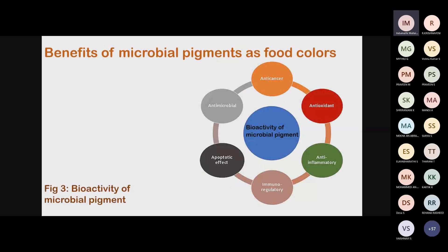Once isolated, what are the actual benefits of these microbial pigments? The benefits include anti-cancer, antioxidant, anti-inflammatory, immunoregulatory, apoptotic, and antimicrobial effects. Not all pigments have all of these properties — for example, prodigiosin has anti-malarial activity, while Arpink Red has anti-cancer and anti-inflammatory properties. However, antioxidant property is common across nearly all microbial pigments, because bacteria inherently have radical scavenging activity, and these pigments carry that property even after extraction. These are some of the key benefits of microbial pigments.